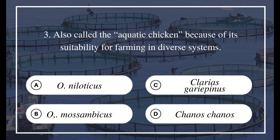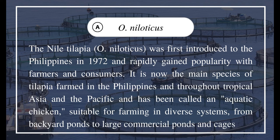Question 3: Also called the aquatic chicken because of its suitability for farming in diverse systems. The answer is O. niloticus. Nile tilapia was first introduced to the Philippines in 1972 and rapidly gained popularity with farmers and consumers. It is now the main species of tilapia farmed in the Philippines and throughout tropical Asia and the Pacific, and has been called the aquatic chicken, suitable for farming in diverse systems from backyard ponds to large commercial ponds and cages.